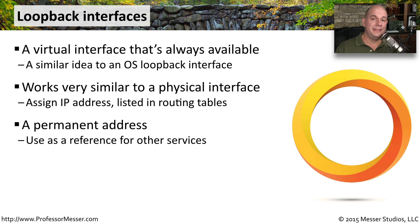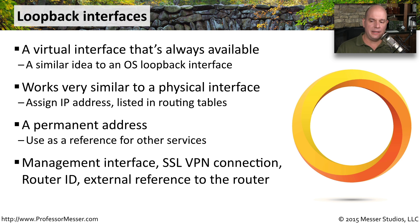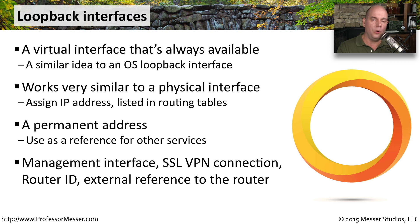Other than being an internal, virtual, non-physical address, a loopback interface works exactly the same as the physical interfaces on your router. It has an IP address, a subnet mask, and you can list it in routing tables. You can reference it as a next hop and use it because you always know it's going to be available as long as that router is turned on. It's commonly used for next hops, management interfaces, SSL VPN destinations, or as a router ID.